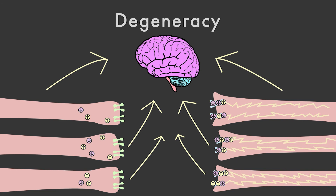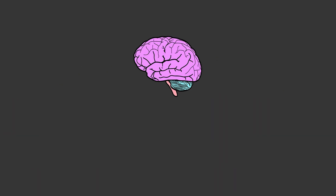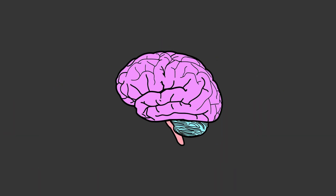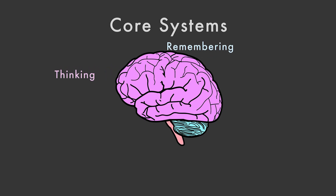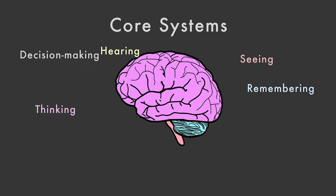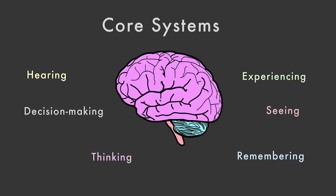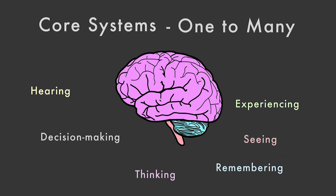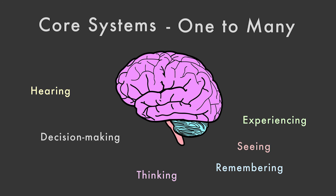In the quest to map the brain, degeneracy is an important, humbling reality check. To be humbled even further, the opposite is also true about the brain. Along with degeneracy, many parts of the brain serve more than one purpose. The brain contains core systems, or networks, of neurons that participate in creating a wide variety of mental states. A single core system or network can play a role in thinking, remembering, decision-making, seeing, hearing, and experiencing. A core system is one to many — a single brain area or network contributes to many different mental states and behaviors.